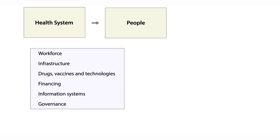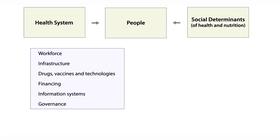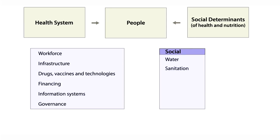Over and beyond the health system, we also have to look at the social determinants of health and nutrition — factors operating at the societal level. Like the availability of clean water, sanitation, food and agricultural systems which provide healthy nutrition across the life course. A clean environment with as little air pollution as possible. Social stability, free from conflict and violence. And having an adequate degree of community participation. All of these matter very much in terms of societal forces.